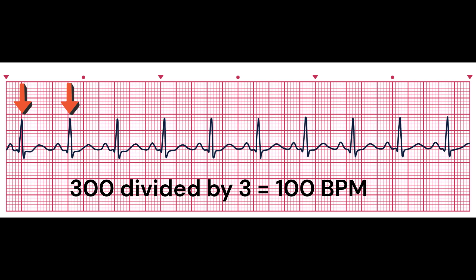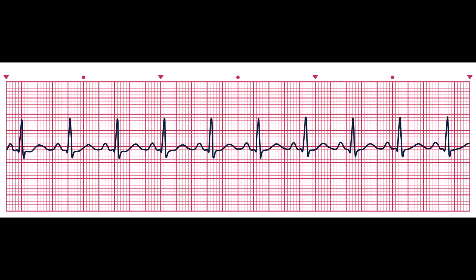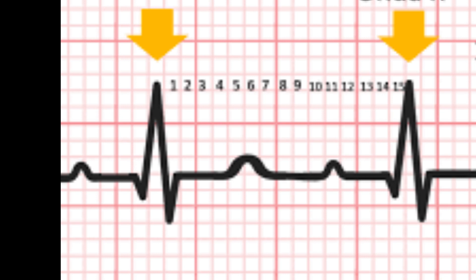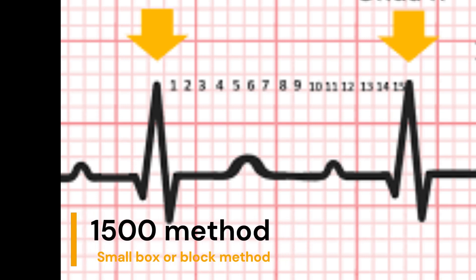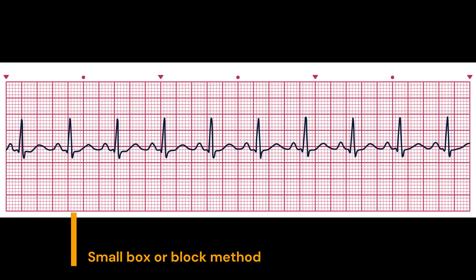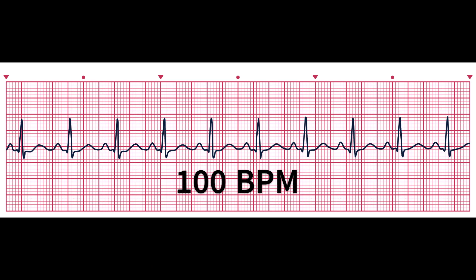The 300 method can only be used on regular rhythms and not on irregular rhythms. The third method is called the small box or block method, also known as the 1500 method. We'll apply the 1500 method to the same EKG strip used earlier, which gave us a heart rate of 100 beats per minute using the 300 method.